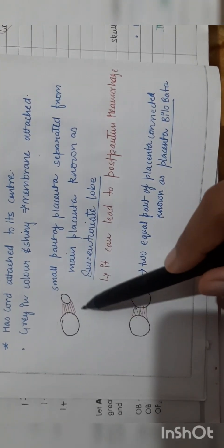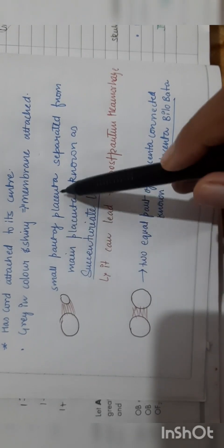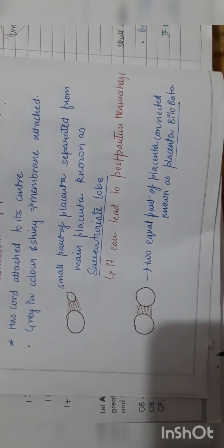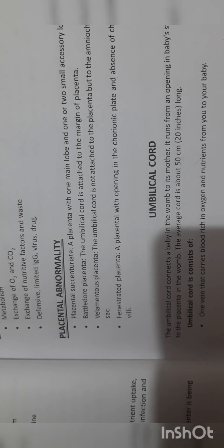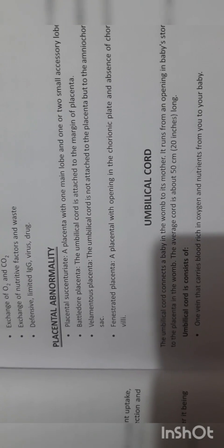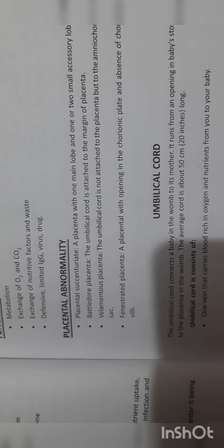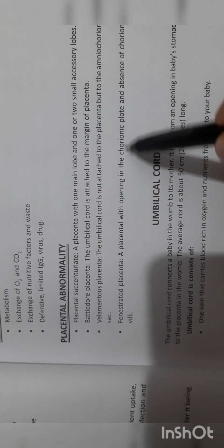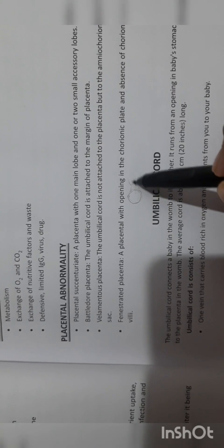Placenta abnormalities: the first is the succenturiate lobe — a small part of the placenta separate from the main placenta, which can lead to postpartum hemorrhage. Second is bipartite placenta — two equal parts connected. Then placenta previa — placenta situated below. Velamentous placenta — the umbilical cord is attached not to the placenta but to the membranes. Fenestrated placenta — a placenta with an opening on the chorionic plate and absence of chorionic villi.